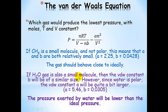Water is also a small molecule, so B should be something similar to methane's value, and it is. The big difference comes in with Van der Waals constant A, because water is polar and it can hydrogen bond — something covered in the intermolecular attractions unit. Water's A is 5.46 compared to methane's 2.25.